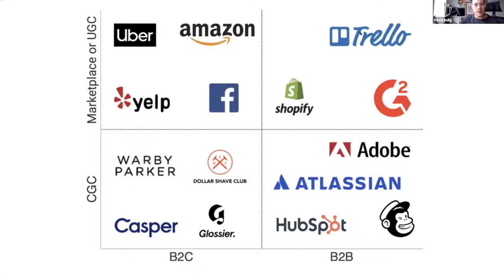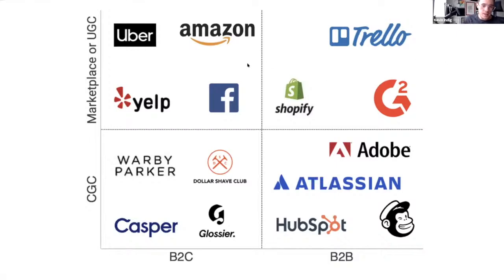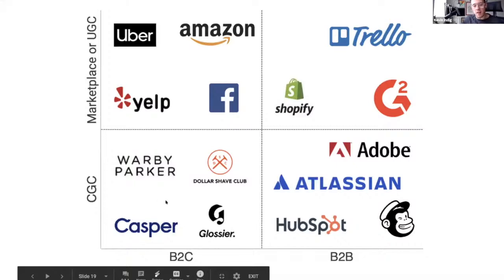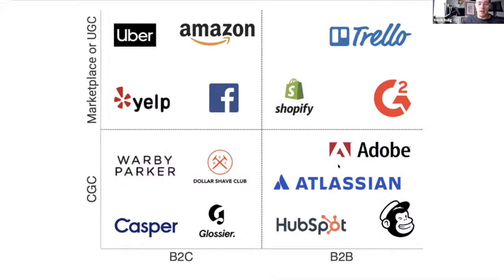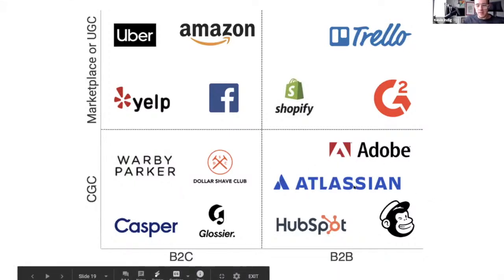On the B2C side, companies like Yelp or Facebook also have an inventory — in Yelp's case it's restaurants and local businesses, in Facebook's case it's pages, profiles, and other taxonomies. They use that to scale their efforts and apply organic growth methodology. Also on the B2C side, you have companies that grow on content marketing, like direct-to-consumer companies sprouting everywhere right now. On the B2B side, companies besides Atlassian that grow on content marketing include Adobe, MailChimp, HubSpot, and many others.